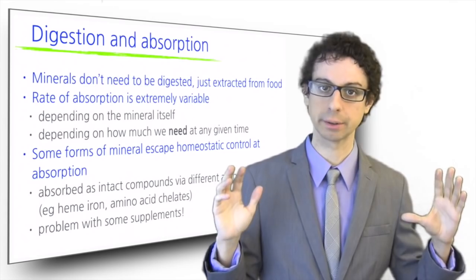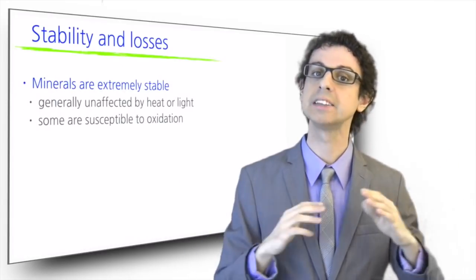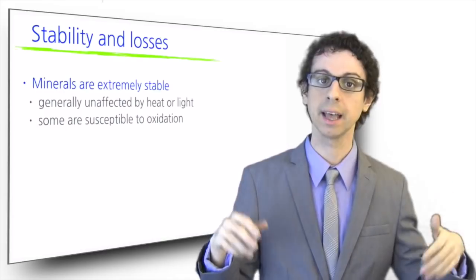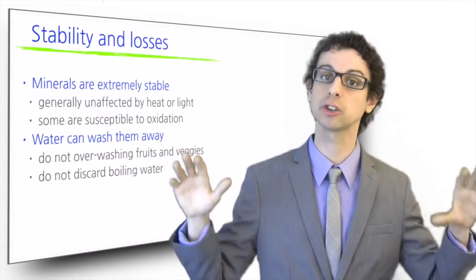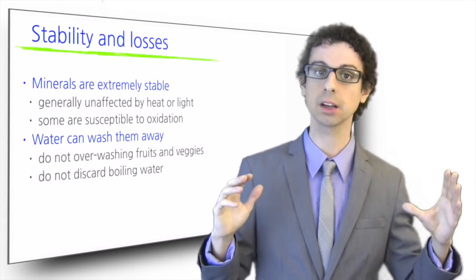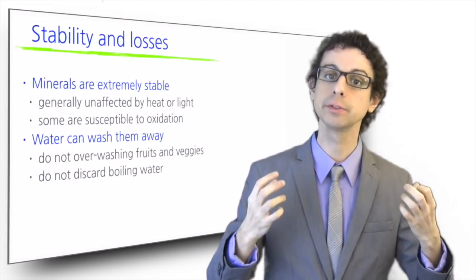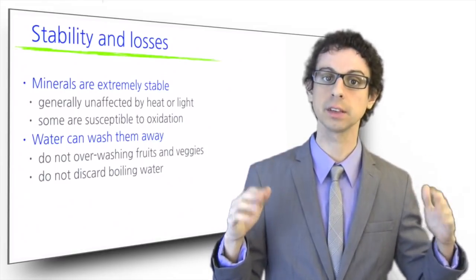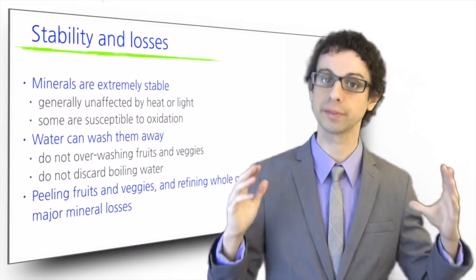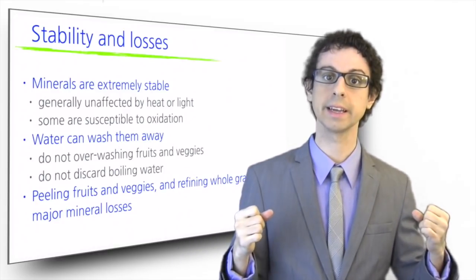A big advantage of minerals, especially if compared to the vitamins, is their stability. Minerals are much more stable and generally unaffected by heat or light, as their structure doesn't change. However, they still can be washed away, so significant losses are possible when we overwash fruits and vegetables and when we boil food and then discard the water. Another major source of mineral losses, as you already know, is refining of whole grains, peeling fruit, and discarding the external layers of vegetables.